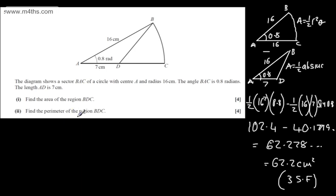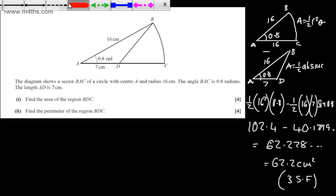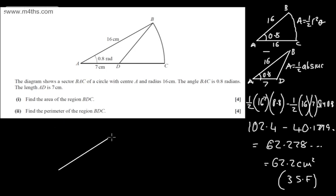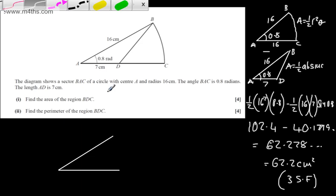In the second part, again for four marks, we need to find the perimeter of the region BDC. So we want this length, this length, and this length right here. We've already got DC — we know that AC is the radius at 16 and AD is 7, so DC must be 9. We'll put that information on and then find the two missing lengths.